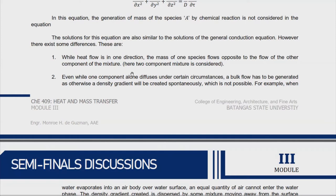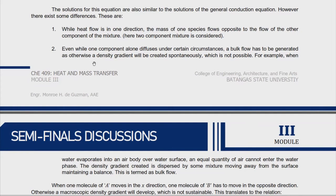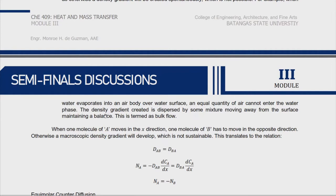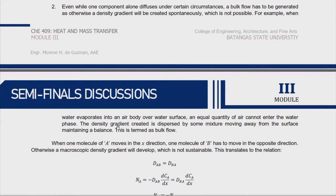In diffusion, when one component flows from higher concentration to lower concentration, the region of high concentration becomes lower, so the tendency is for the other component to flow in the opposite direction — they're trying to reach equilibrium. That's why mass transfer considers two directions. Also, even while one component alone diffuses, a bulk flow must be generated; otherwise a density gradient will be created spontaneously, which is not possible. For example, when water evaporates into air, an equal quantity of air cannot enter the water phase — a mixture moves away from the surface to maintain balance, termed bulk flow.